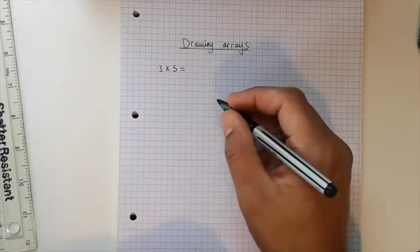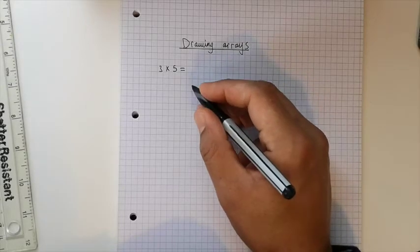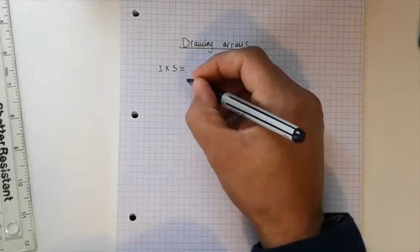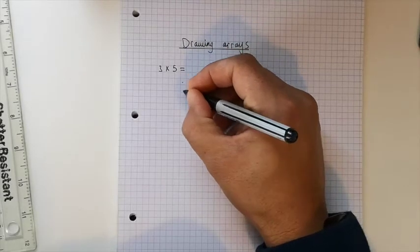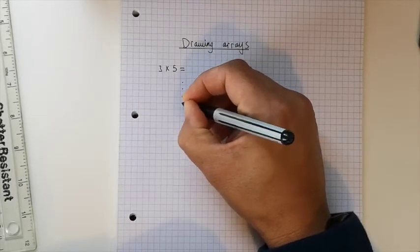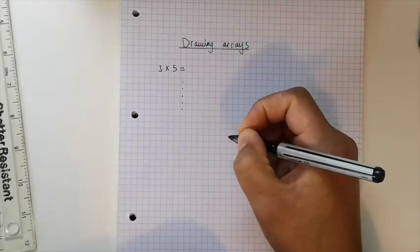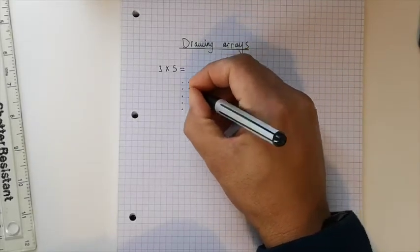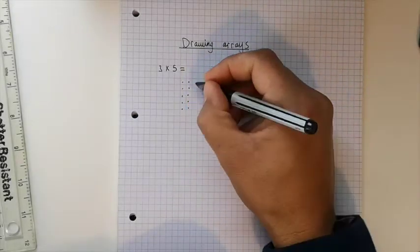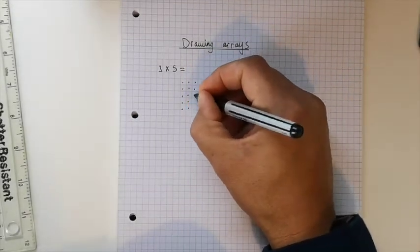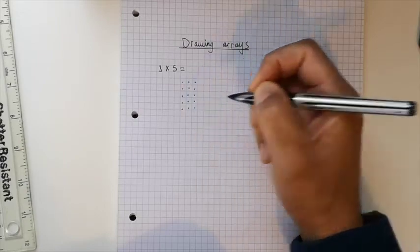Now I'm going to draw three columns of five dots. I'm just going to use dots today to represent my items. So I'm going to do one column: one, two, three, four, five; one, two, three, four, five; one, two, three, four, five.